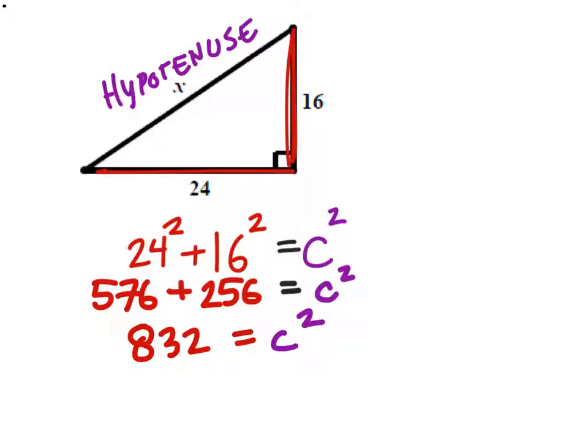So we've got to do the inverse of square, which is the square root. So we're going to square root 832.